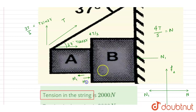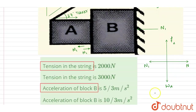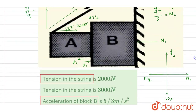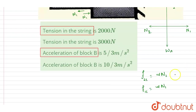The limiting friction force can be determined for each surface. For surface 2, the limiting friction is mu times N2, and for surface 1, the limiting friction is mu times N1. Since mu is the same for both surfaces and equals one-half, we apply half in both cases.